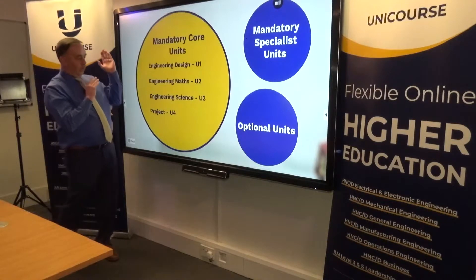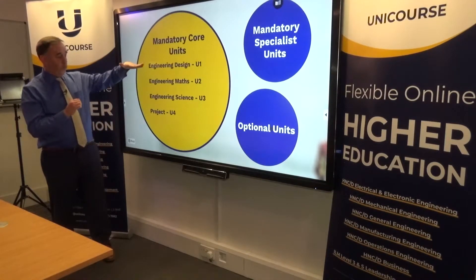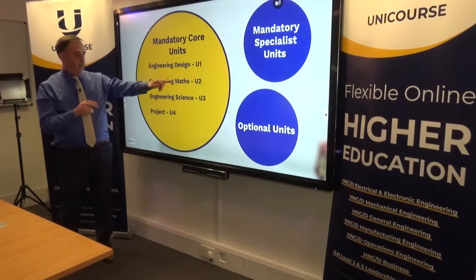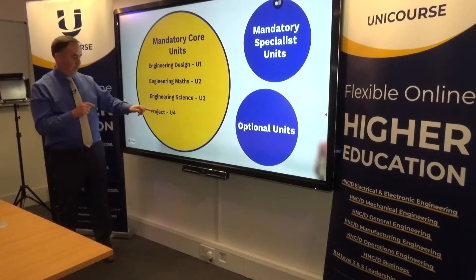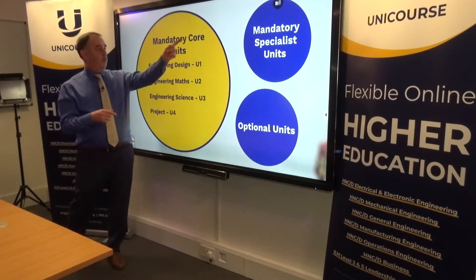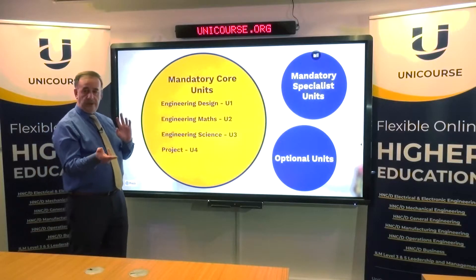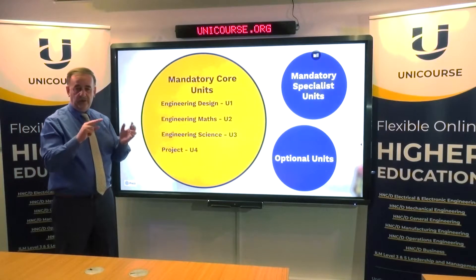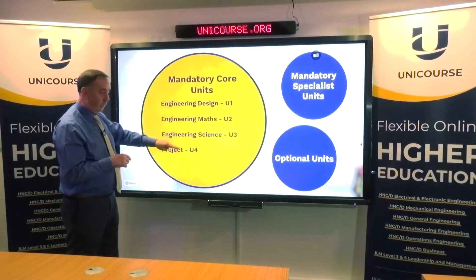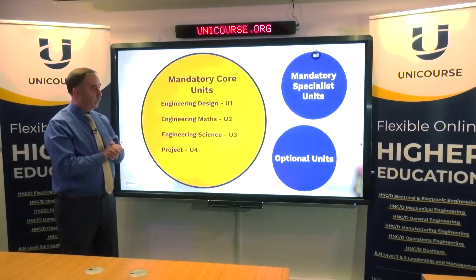All HNC engineering programs have four mandatory units: Design, Math, Science, and Projects. Everybody needs those — they're called mandatory core units. It doesn't matter which program you're on, whether manufacturing, electrical, mechanical, operations, or general engineering, you still have to navigate through these four modules. They're the EDEXCEL rules.